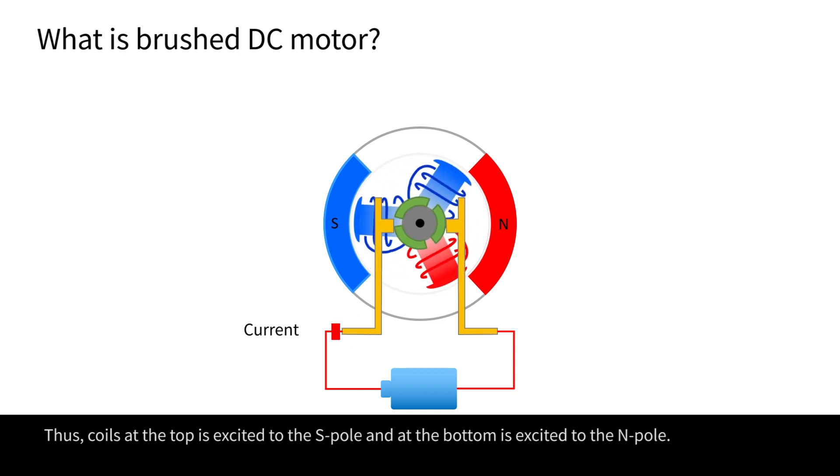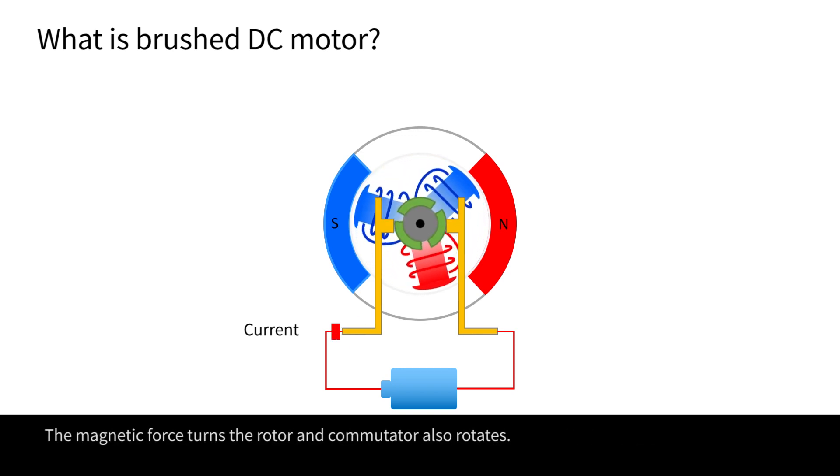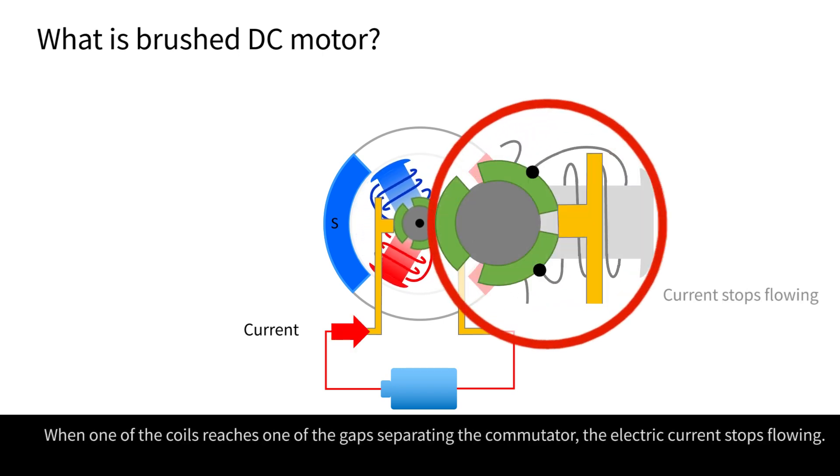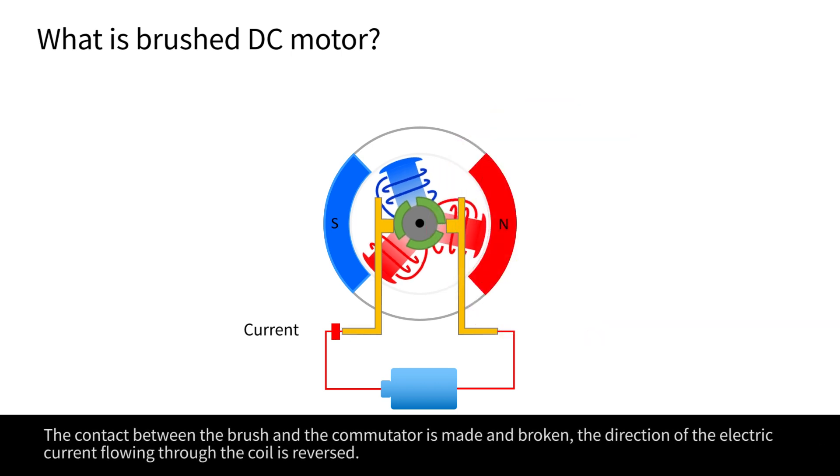Thus, coils at the top is excited to the S-pole, and at the bottom is excited to the N-pole. The magnetic force turns the rotor, and commutator also rotates. When one of the coils reaches one of the gaps separating the commutator, the electric current stops flowing.